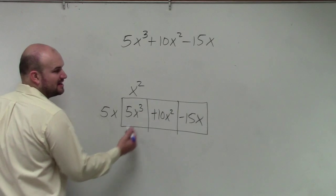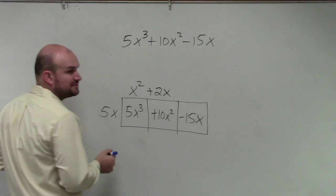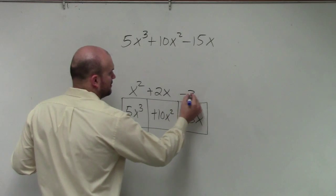So then 5x times what gives you 10x squared? 2x. 5x times what gives you negative 15x? Negative 3. Negative 3.